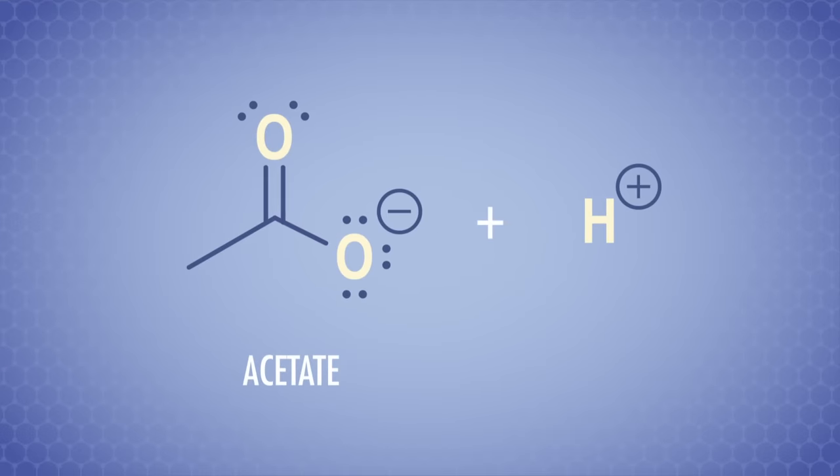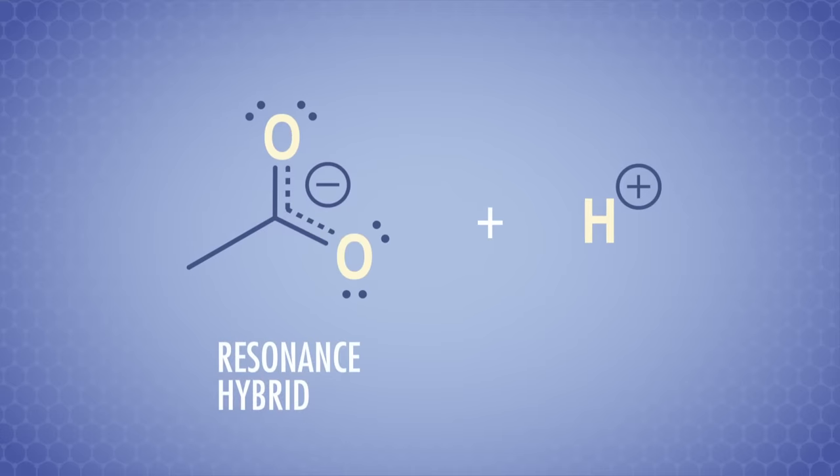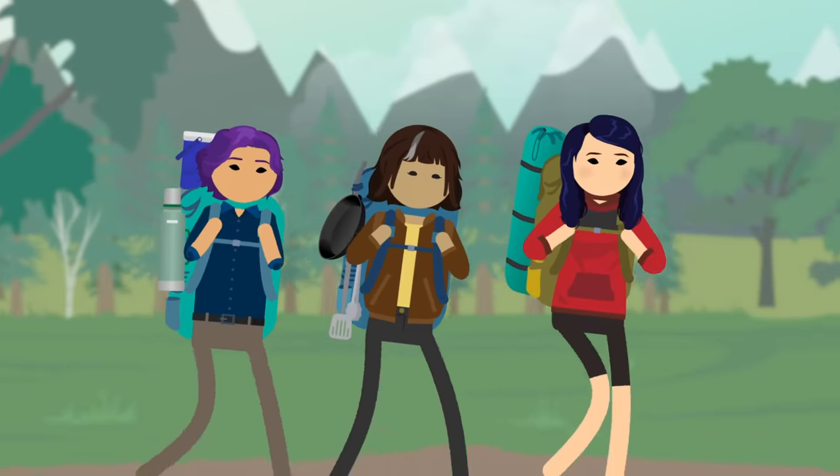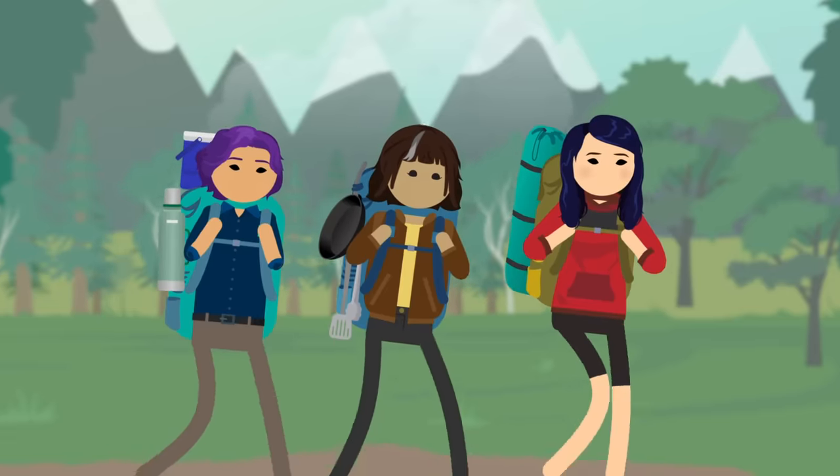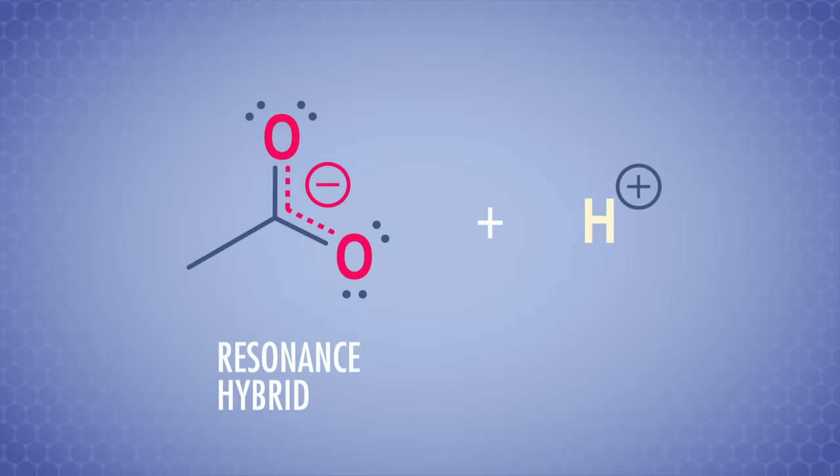When acetic acid loses a proton, it forms its conjugate base, acetate. And remember last episode we talked about the resonant structures of an acetate ion, and how the negative charge is spread out over its two oxygen atoms. This is kind of like going backpacking with a group of friends and splitting up the gear. So like, instead of carrying everything yourself, you take the tent, another friend takes the cooking gear, and another takes the food. Distributing the weight means you all carry some of the burden. The same is true here. Distributing the negative charge over the two oxygen atoms makes it easier for the acetate ion to carry the burden of the negative charge. Because of the resonant stabilization in the conjugate base, it's not too tough for acetic acid to lose a proton.